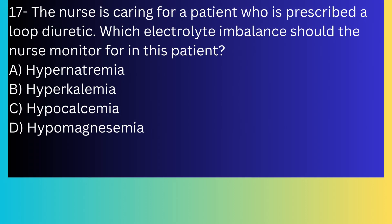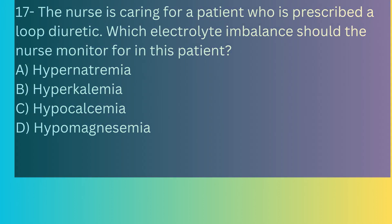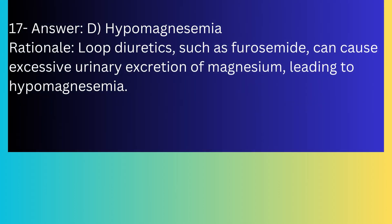Question number seventeen: The nurse is caring for a patient who is prescribed a loop diuretic. Which electrolyte imbalance should the nurse monitor for? A) Hypernatremia, B) Hyperkalemia, C) Hypocalcemia, D) Hypomagnesemia. The answer is D, hypomagnesemia. Loop diuretics such as furosemide can cause excessive urinary excretion of magnesium, leading to hypomagnesemia.